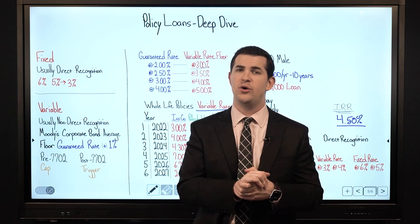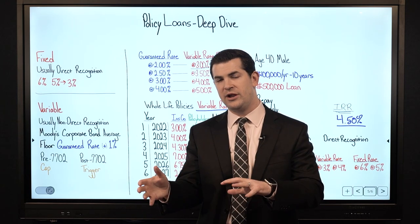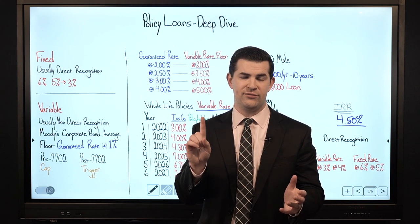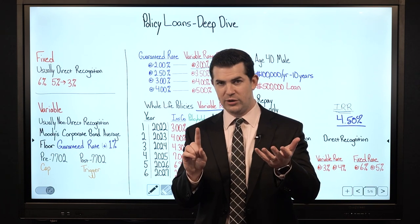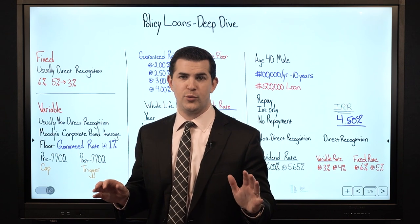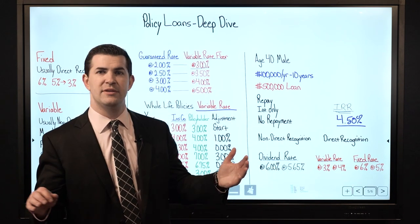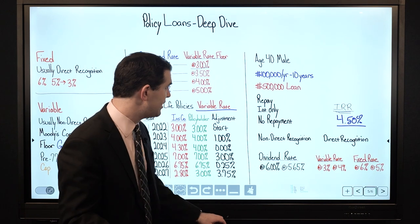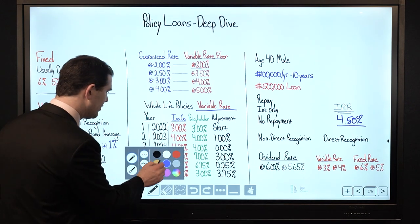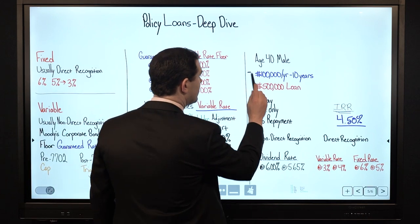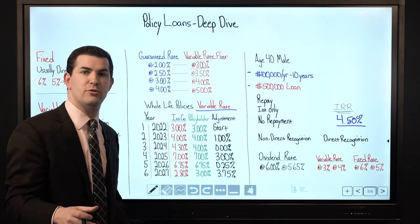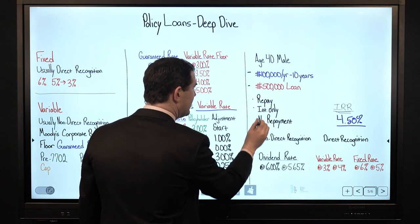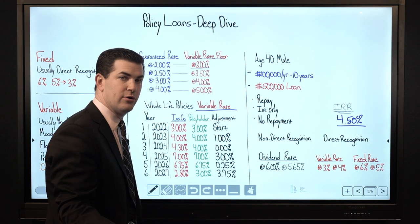Round 2. In this video we are going to look at a similar scenario — almost identical to the last video — with one difference: a higher variable loan interest rate. In the last video we looked at an age 40 male, 10-pay policy with MassMutual, 6% dividend interest rate. He funded the policy at $100,000 per year for 10 years, took a $500,000 loan in policy year 6, and we illustrated what it looks like if you repay the loan, pay interest only, and don't repay it at all.